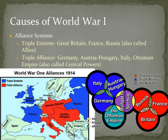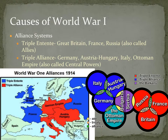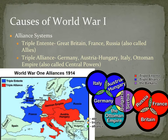Another major cause is the alliance systems, which is really important to understand. Make sure you write down the alliances and which countries are involved. The Triple Entente includes Great Britain, France, and Russia — also called the Allies during the war. The Triple Alliance includes Germany, Austria-Hungary, Italy, and the Ottoman Empire — also called the Central Powers. It's important to know those two alliance systems.